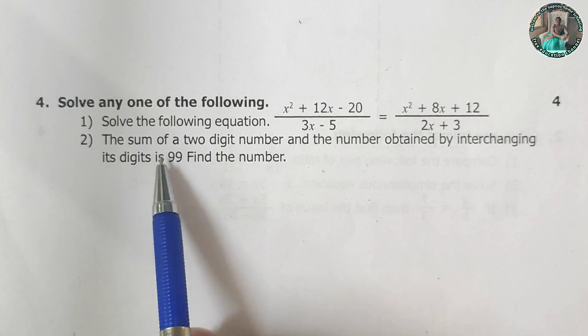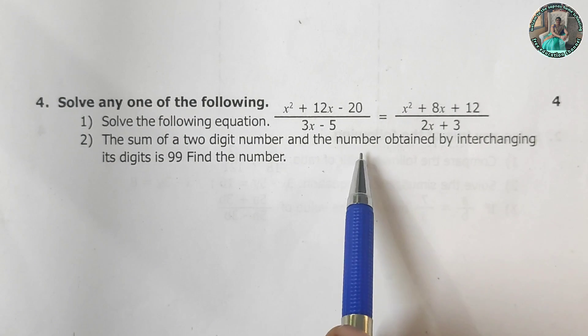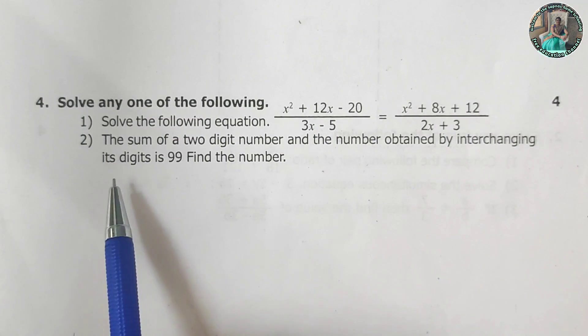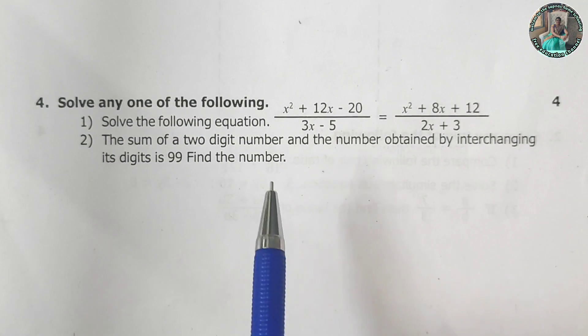Now question 2. The sum of a two digit number and the number obtained by interchanging its digits is 99. Find the number.